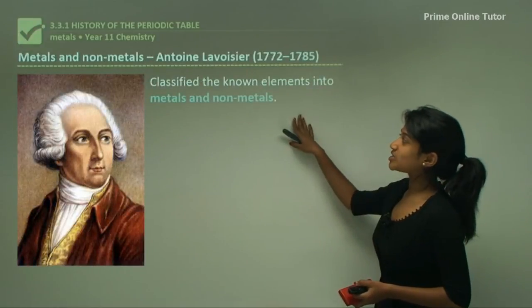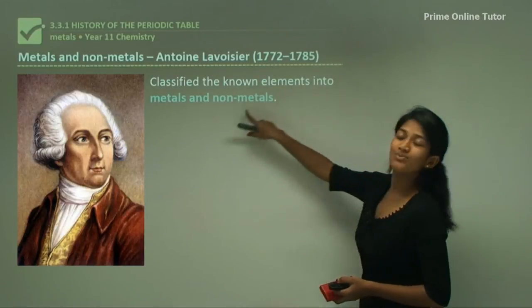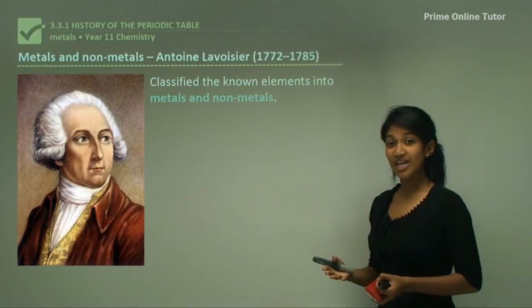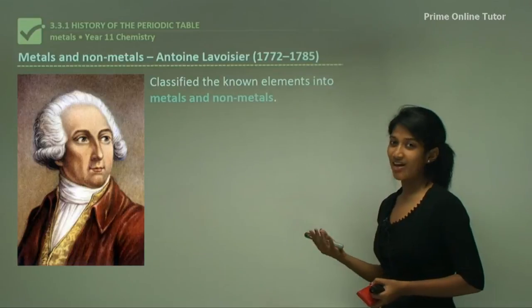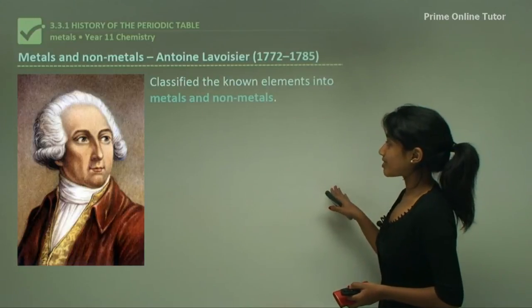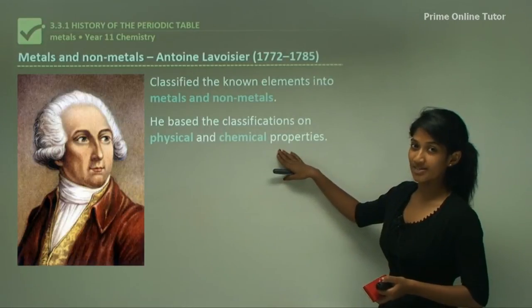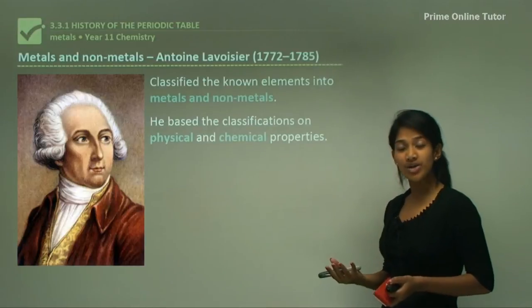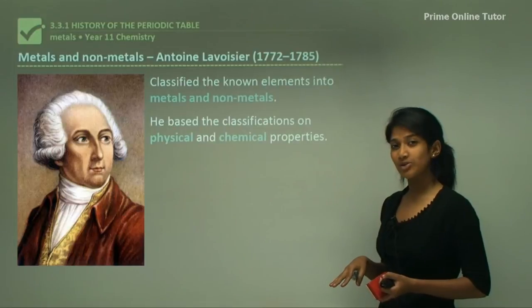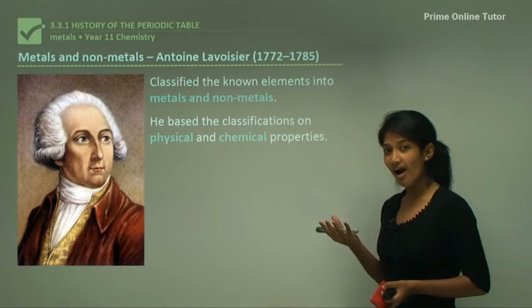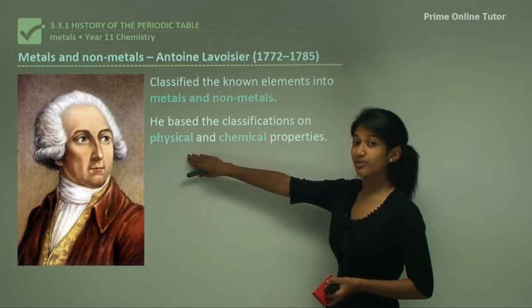First we'll be looking at Antoine Lavoisier. He classified the known elements into metals and non-metals. In the periodic table today, towards our left stand the metals and towards our right stand the non-metals. He based these classifications on physical and chemical properties. Some physical properties would be boiling point and melting point — non-metals have quite low melting and boiling points while metals have quite high ones.